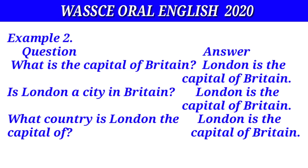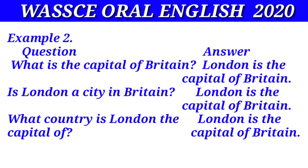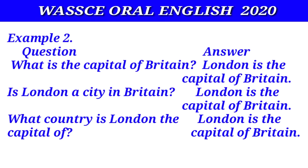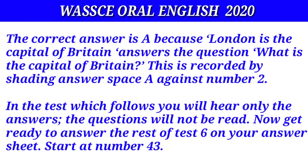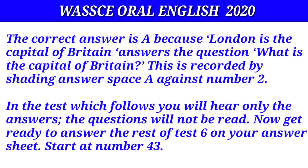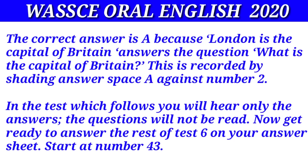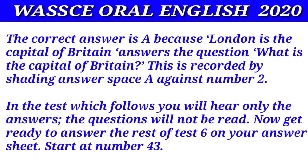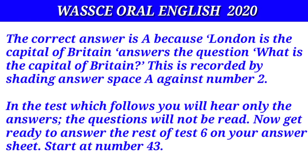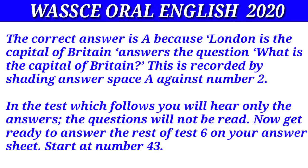Example two: what is the capital of Britain? — London is the capital of Britain. Is London the capital of Britain? — London is the capital of Britain. What country is London the capital of? — London is the capital of Britain. The correct answer is A because London is the capital of Britain answers the question, what is the capital of Britain? This is recorded by shading answer space A against number two. In the test which follows you will hear only the answers; the questions will not be read. Now get ready to answer the rest of test six on your answer sheet. Start at number forty-three.